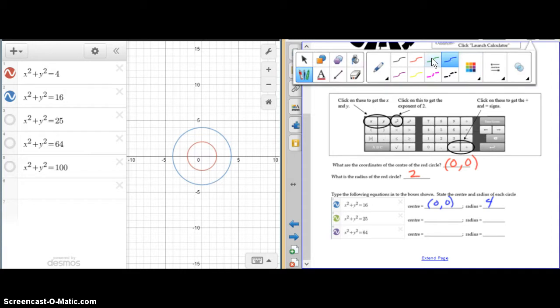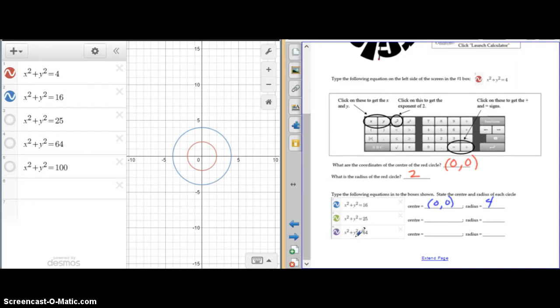The third circle was the green circle. Its equation was x squared plus y squared equals 25. When you graph that, you got a center of 0, 0, and a radius of 5.